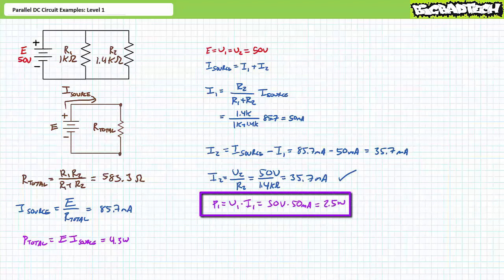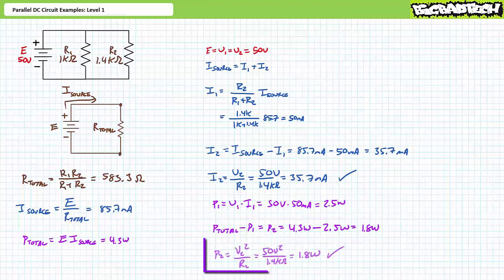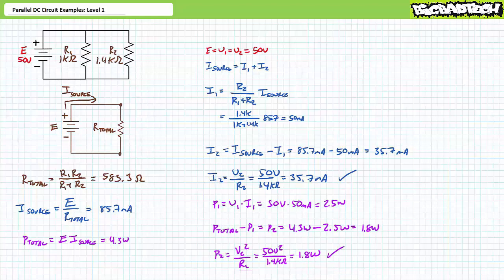P1 equals V1 times I1; substituting yields 2.5 watts. By algebraic rearrangement of the power equation, P2 is the remaining 1.8 watts. As a check, V2 squared over R2 does indeed yield 1.8 watts. I've got a reasonable degree of confidence our answers are correct, and we can move on to the next illustrated example.